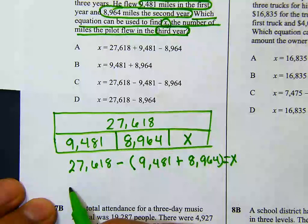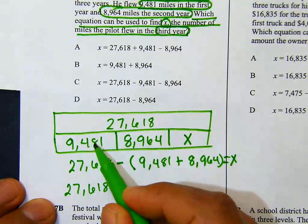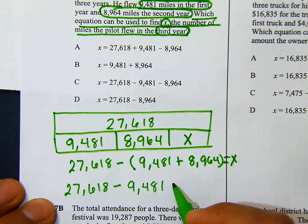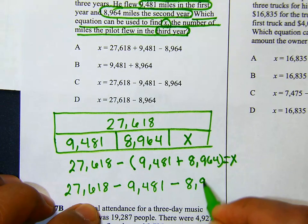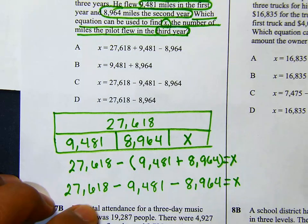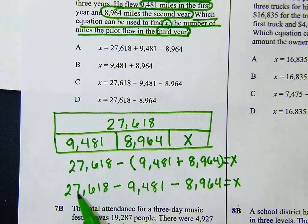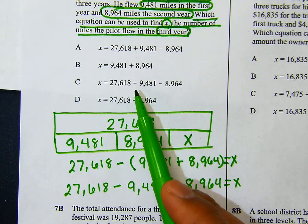Another way we could do it: take 27,618 and subtract 9,481 first, then whatever we get, subtract 8,964, and that should give us x — the number of miles he flew in the third year. Looking at the answer choices, we see 27,618 minus 9,481 minus 8,964, so our answer is C.